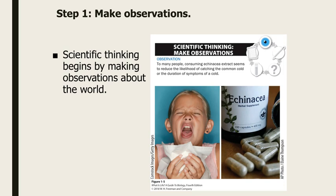The first step is the easiest because it's one you do on a regular basis. There's no time in your life that you aren't making observations, and these can be made with any of your senses — not just your eyes. A good example from your book: taking echinacea seems to reduce the likelihood of catching the common cold. That's an observation you might make by hearing someone else say it or by taking echinacea yourself and noticing you haven't been getting many colds.